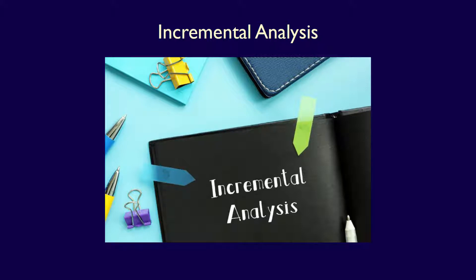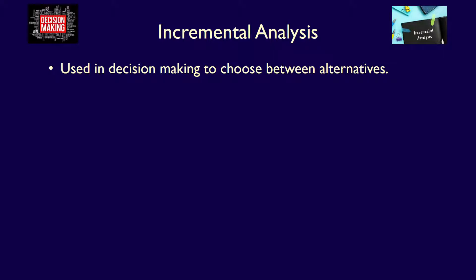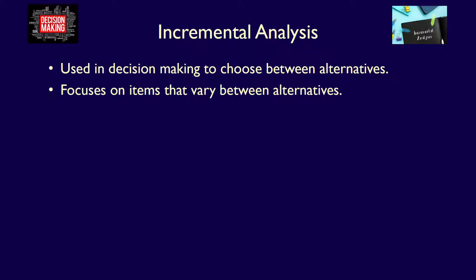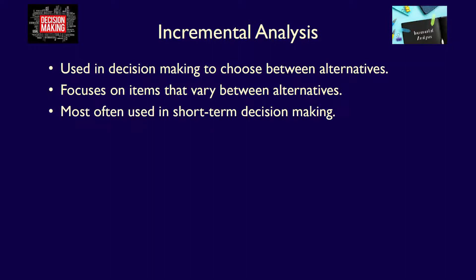What is incremental analysis and how can it help management in the decision-making process? In step two of the decision-making process, management must analyze the alternatives using financial information. Incremental analysis focuses on items — generally revenues and costs — which change between alternatives. Using this method, we don't look at the entire income statement for each alternative; instead, we look at how operating income would change under each alternative. Incremental analysis is most often used in short-term decision-making, when management considers how to best use resources in the short term. These decisions are typically operational in nature.